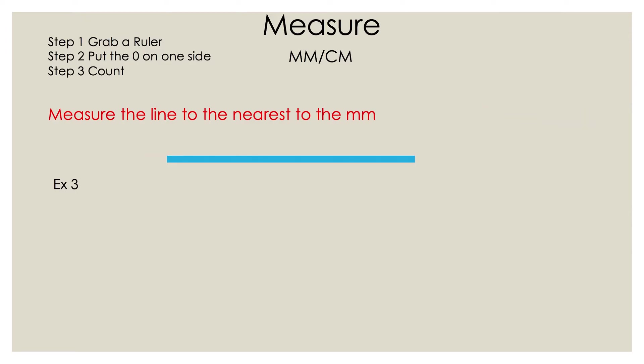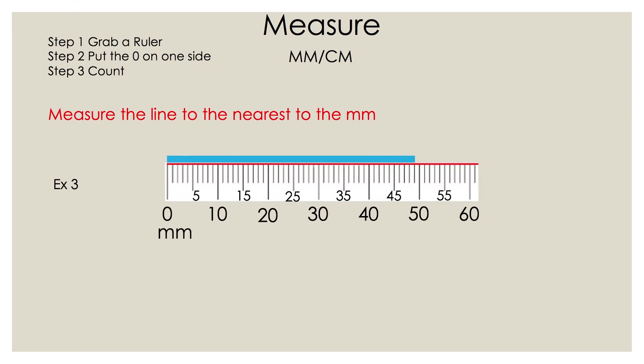Now what happens if you start off with, instead of asking us to measure the line to the nearest centimeter, you're asked to measure the line to the nearest millimeter. You do the same thing. Grab a ruler, put the zero on one side, and count.